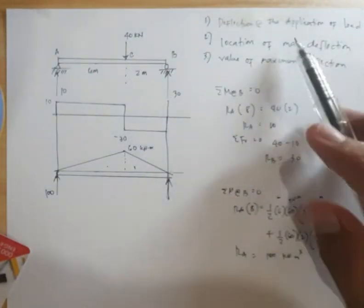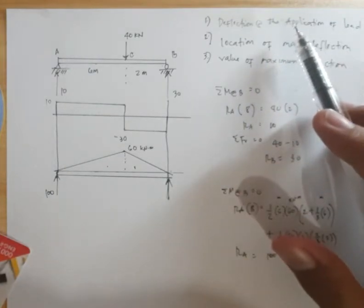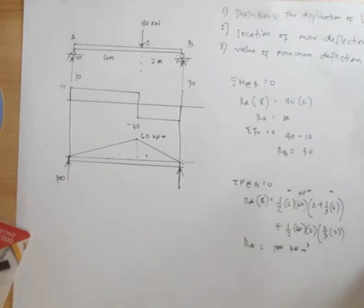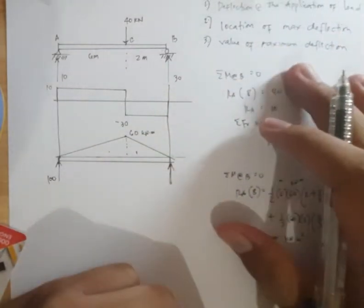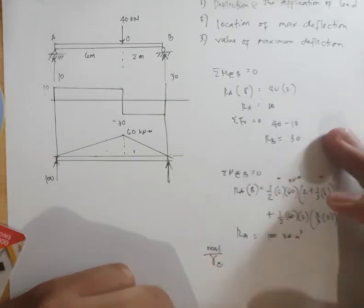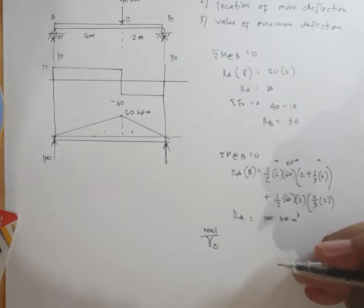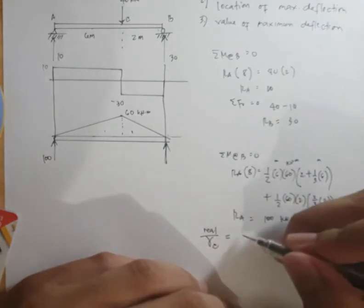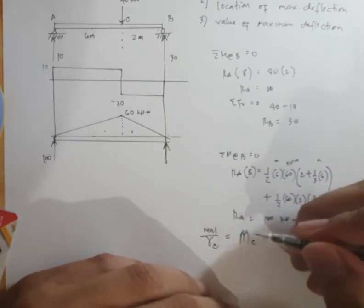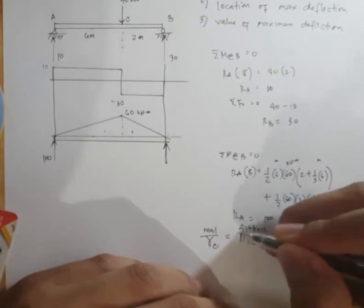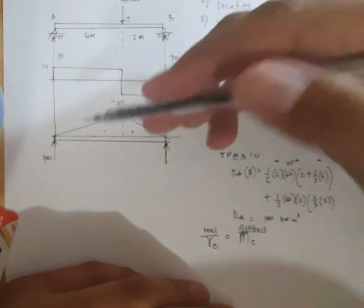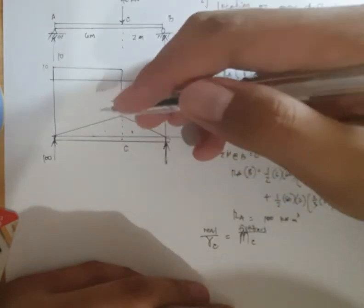So, we have to compute for the deflection at the application of the load. So, according to conjugate beam method, the deflection at the real beam is equal to the moment. The deflection at C of the real beam is equal to the moment at C of the fictitious. So, para makuha ang deflection, kina makuha ang moment. So, what is the moment at C?